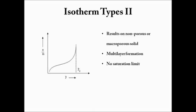As for the type 2 isotherm, it can be initially explained by the Langmuir equation. However, it requires the BET equation to further explain the multilayer formations.